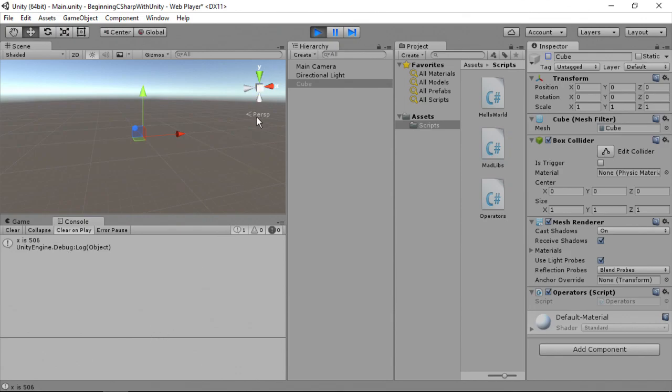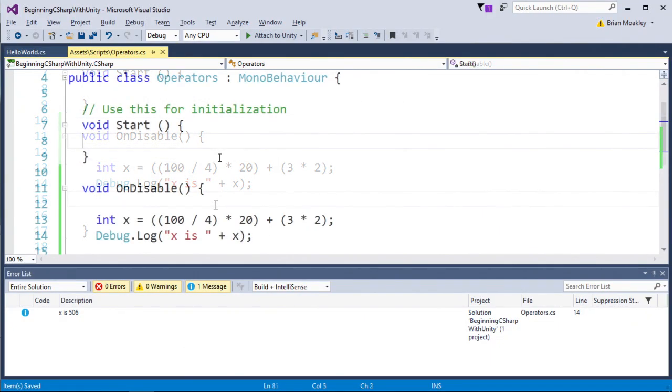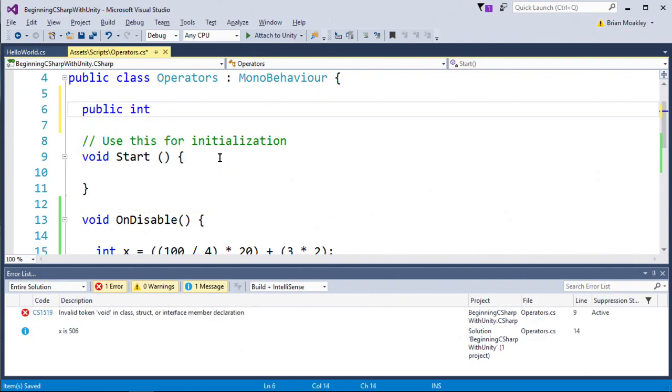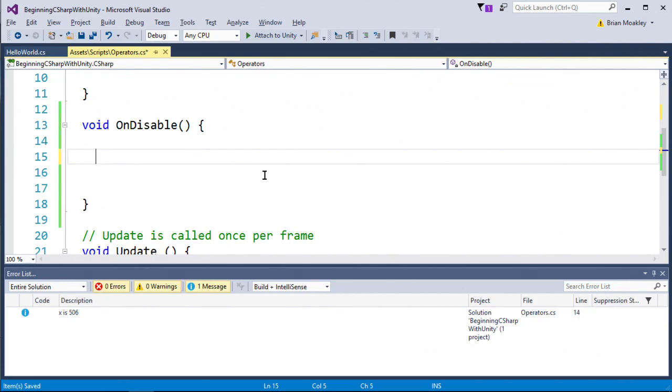Let's do a quick demonstration of the modulus operator. I'm going to switch back. In this case, I'm going to create a public integer. And we're going to call this value, and we'll set it to zero. Now what we'll do in onDisable is we'll determine if this is even or not. Now remember, if the modulus prints out zero, then it's even. If it prints out one or higher, that means it's odd.